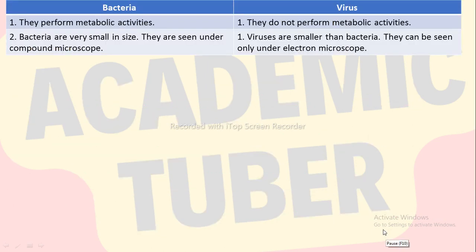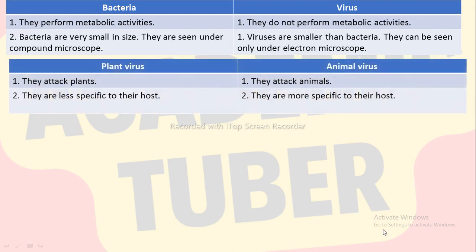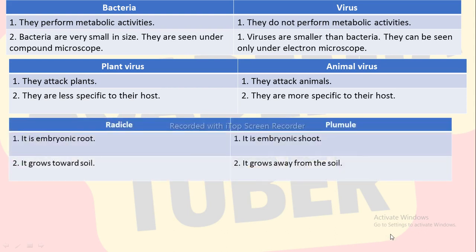Differences between bacteria and virus: bacteria perform metabolic activities, whereas viruses do not perform metabolic activities. Bacteria are very small in size and are seen under a compound microscope; viruses are smaller than bacteria and can be seen only under an electron microscope. Differences between plant virus and animal virus: plant viruses attack plants, whereas animal viruses attack animals. Plant viruses are less specific to their host. Differences between radicle and plumule: radicle is the embryonic root and plumule is the embryonic shoot. Radicle grows towards the soil, whereas plumule grows away from the soil.